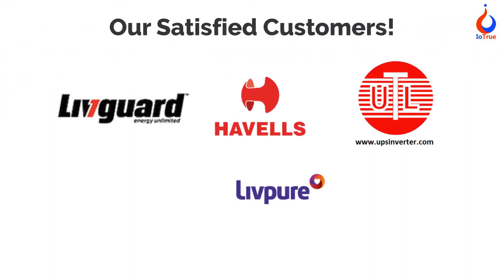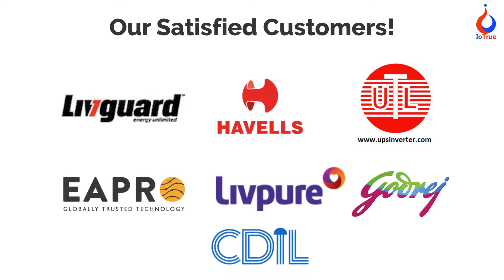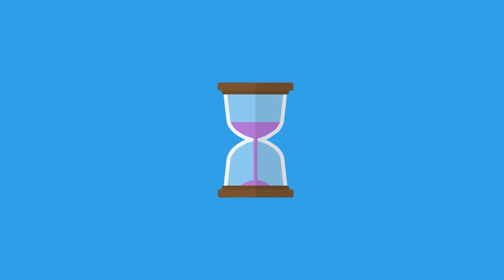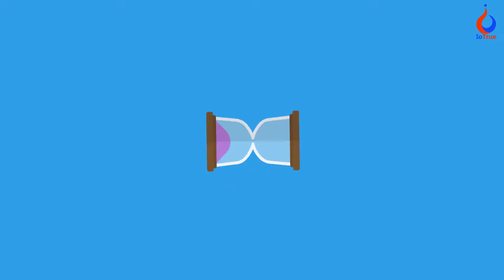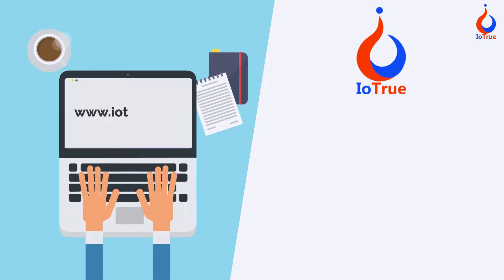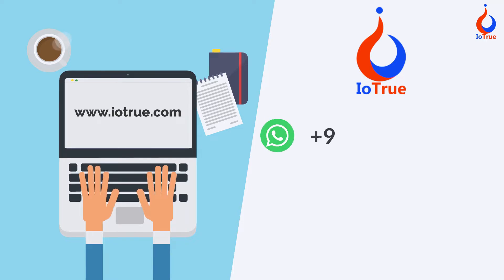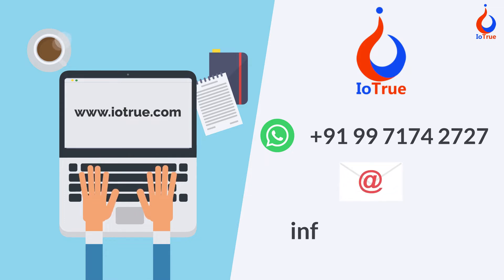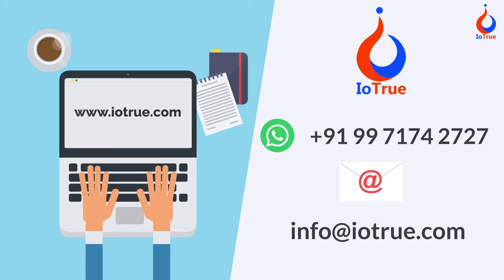We also provide production programmer customization as per your production line. Please visit our website www.iotrue.com, or contact us on WhatsApp at +91 9971742727. You can also email us at info@iotrue.com for support.